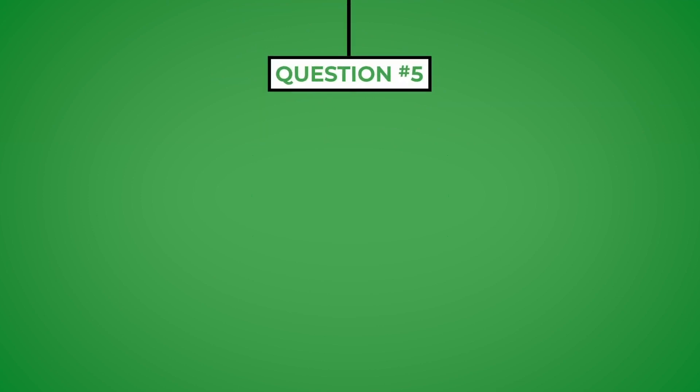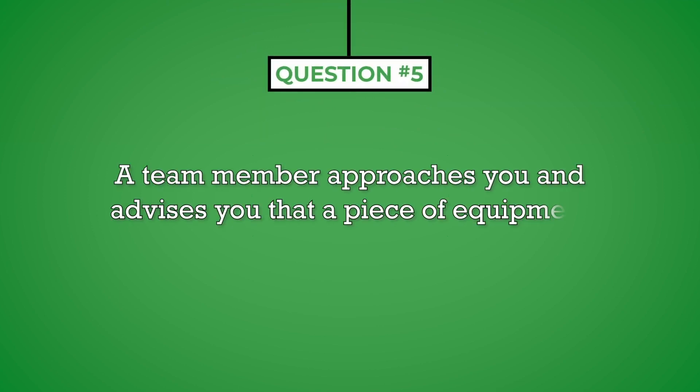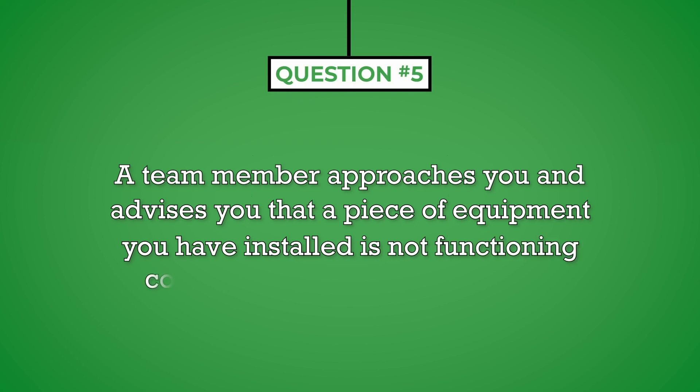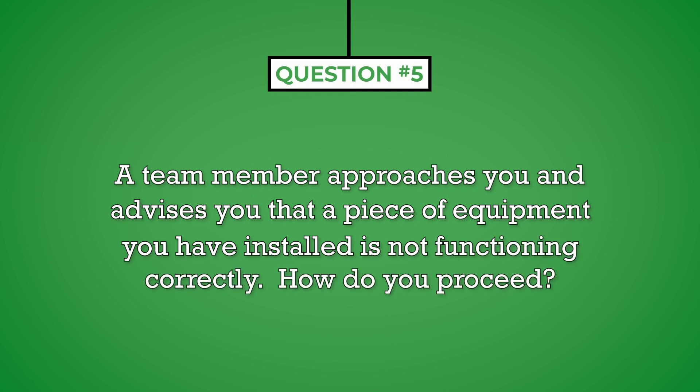Question number five: a team member approaches you and advises you that a piece of equipment you have installed is not functioning correctly. How do you proceed? This will be a common occurrence in almost every manufacturing engineer's career. An engineer must show that they are willing and able to utilize feedback from the shop floor to solve problems and make improvements. Sometimes the feedback offered will be incorrect or not constructive, but it is imperative that the manufacturing engineer does not automatically assume this is the case.